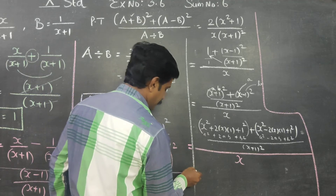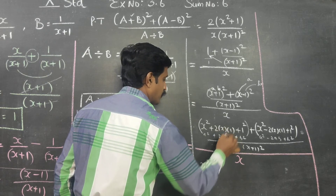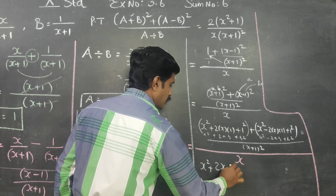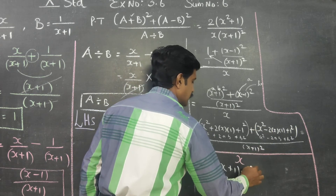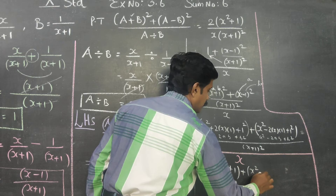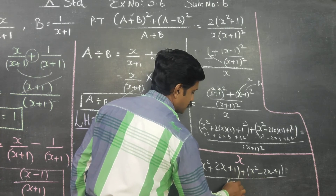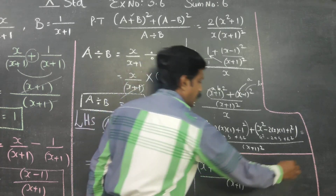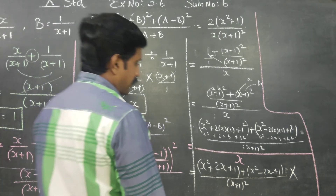Simplifying: you will be getting x squared plus 2 times x times 1 which is 2x, plus 1 squared which is 1. Plus x squared minus 2 times x times 1 which is minus 2x, plus 1. All divided by x plus 1 all square, into 1 divided by x — since a divided by b equals x, which can be written as x by 1.